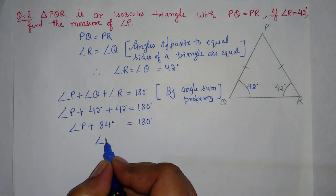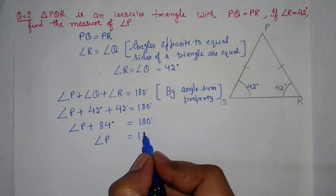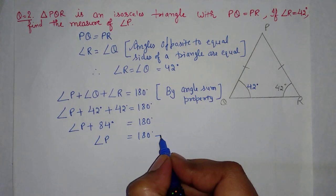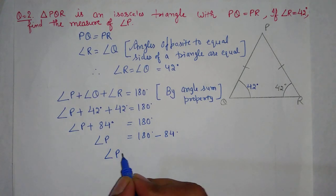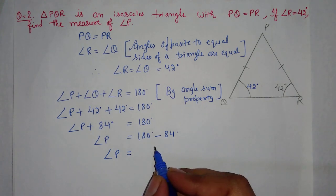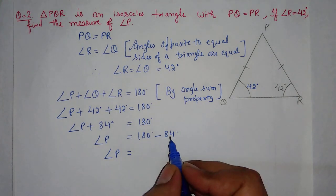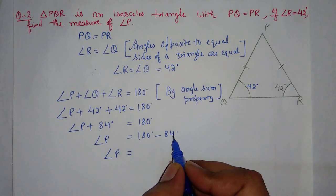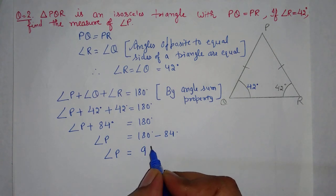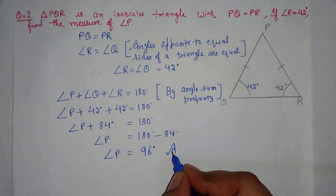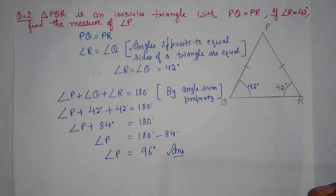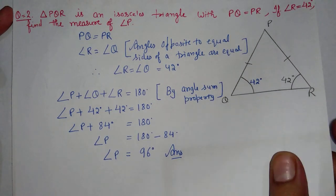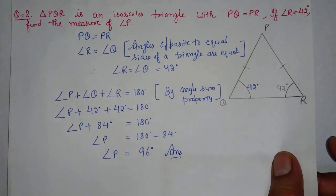Angle P equals 180 minus 84, so angle P's value is 96 degrees. 80 cancels, 100 minus 4 equals 96 degrees. So angle P's value is 96 degrees. This is your answer for question number 2.